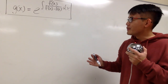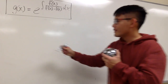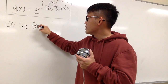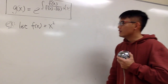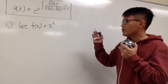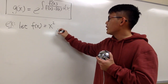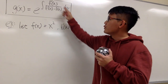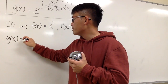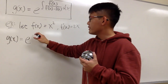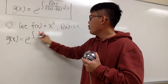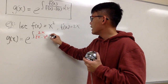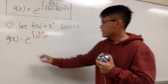Now let me show you how to use this formula to get f and g so the fake product rule actually works. The key is to choose an f that makes this integral manageable — not too crazy. I'll select f(x) = x squared. Then f prime(x) = 2x, and I plug these into the formula: g(x) equals e to the integral of 2x over (2x minus x squared) dx.